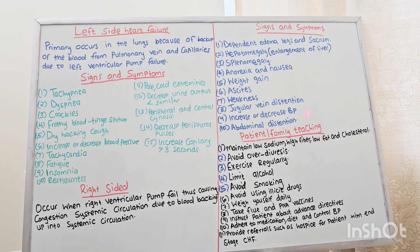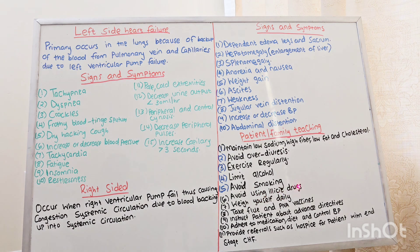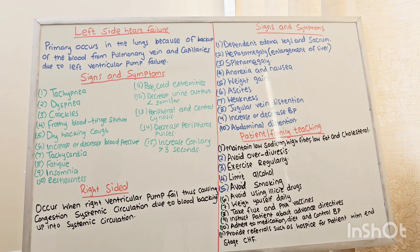Now let's talk about patient and family teaching. Maintain a low sodium, high fiber, low fat and cholesterol diet. Avoid over-exertion. Exercise regularly. Limit alcohol. Avoid smoking and illicit drugs. Weigh yourself daily. Take the flu and pneumonia vaccine. Instruct the patient about advanced directives. Adhere to medication, diet, and blood pressure control. Provide referrals such as hospice for patients with end-stage heart failure.